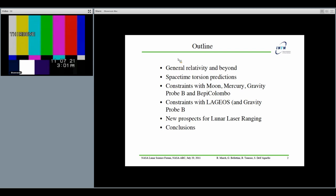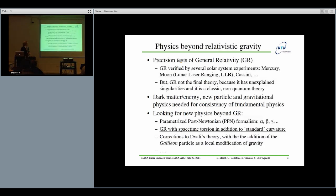The outline is: I will introduce why we need to go beyond general relativity, what kind of predictions we are making about space-time torsion, and what constraints we get from lunar laser ranging, from the Mercury perihelion advance, from Gravity Probe B, and the JAXA mission to Mercury BepiColombo, and how we also increase these constraints with LAGEOS, the laser geodynamics satellite, which is complementary for some measurements to Gravity Probe B. Then I'll give you new prospects for our beloved lunar laser ranging.